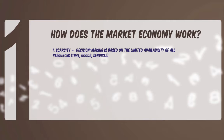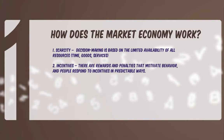The second is incentives. There are rewards and penalties that motivate behavior, and people respond to incentives in predictable ways. We'll talk in a minute how Gus responds to incentives in starting his pie business, but you and I respond to incentives in many areas of life. In the free enterprise system, we have very clear incentives in terms of responding to sale prices when we buy the things that we desire.